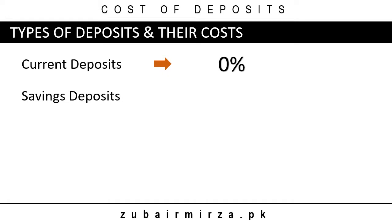Next is savings deposits — this is common men's money: their salaries, pensions, and small savings. These too are demand deposits, but their ticket size is small and transactions are not frequent. Banks pay a modest return on these deposits. Let's assume the market rate for savings deposits is 3% per annum.